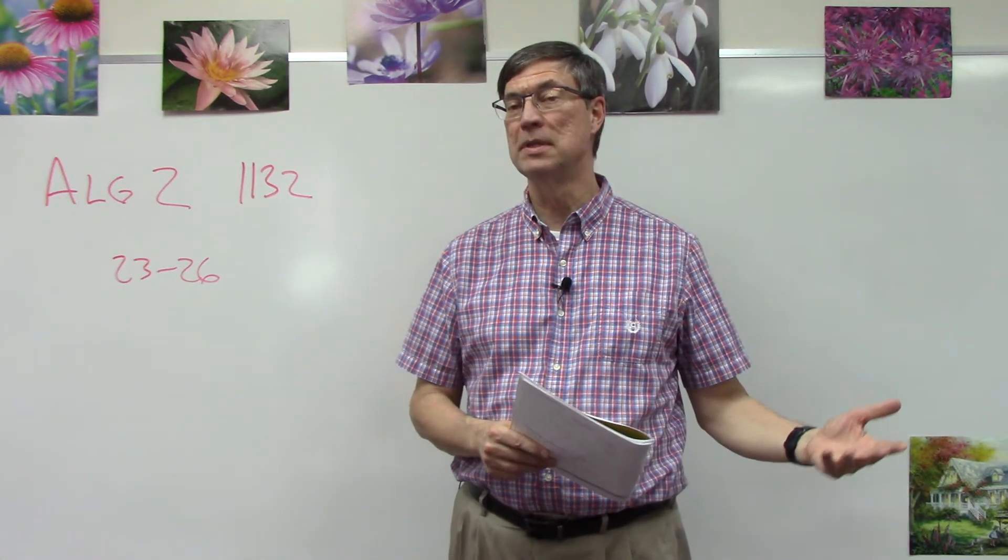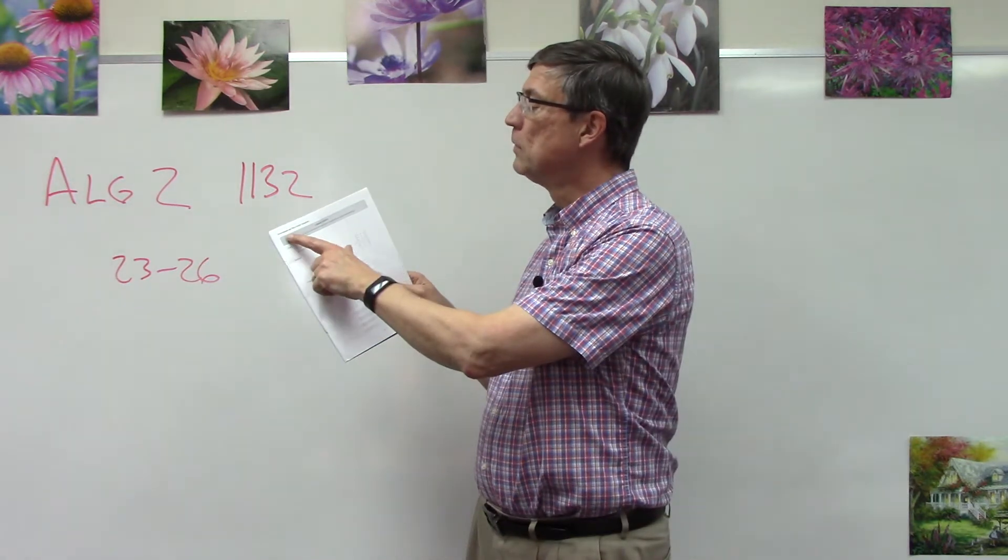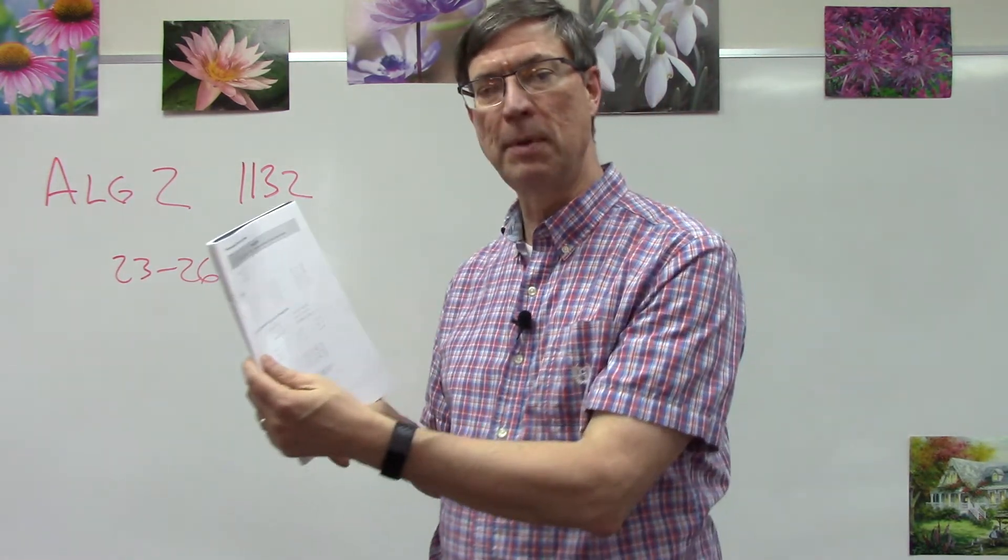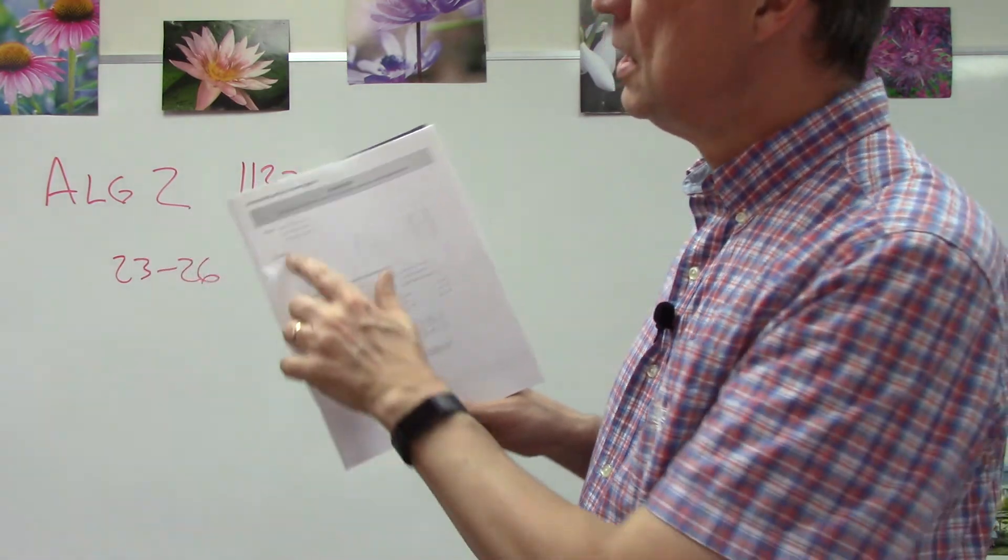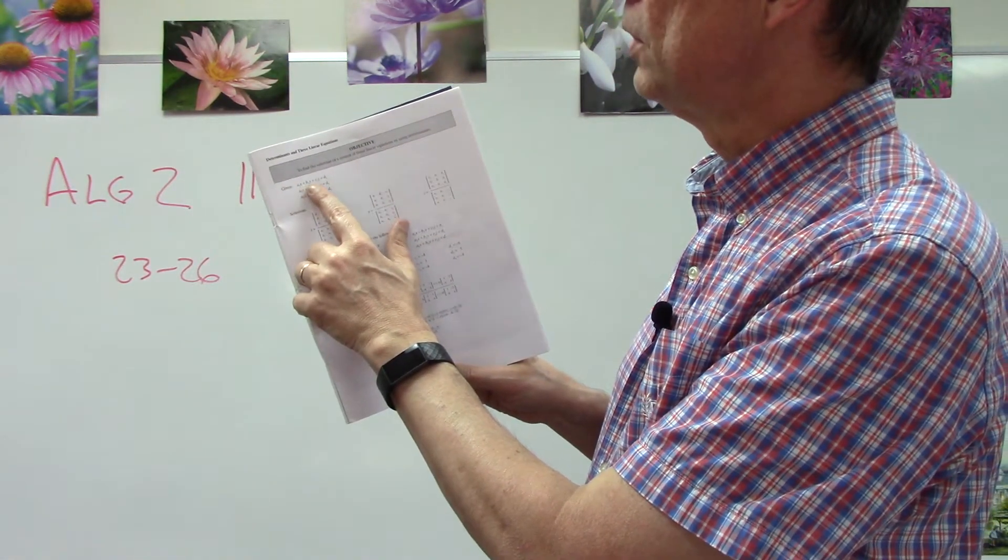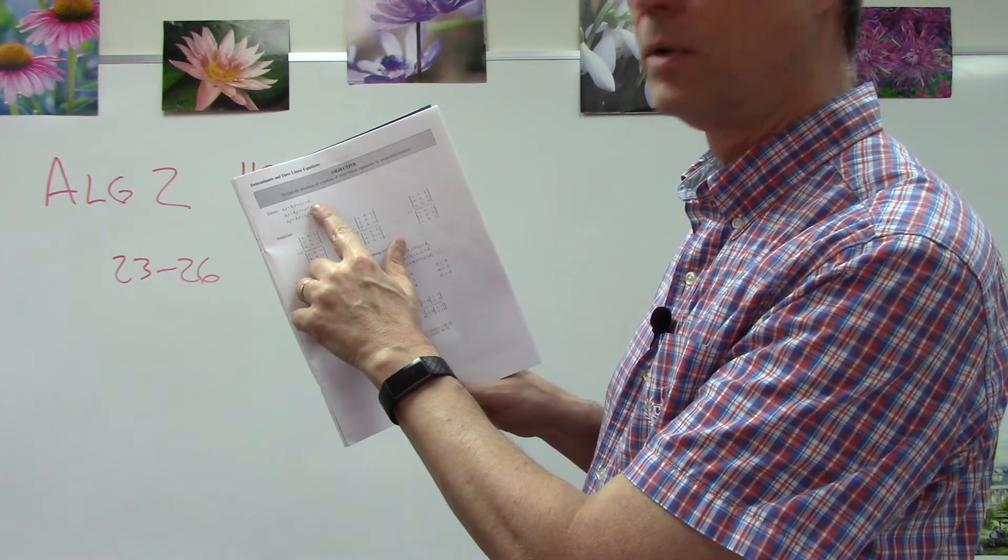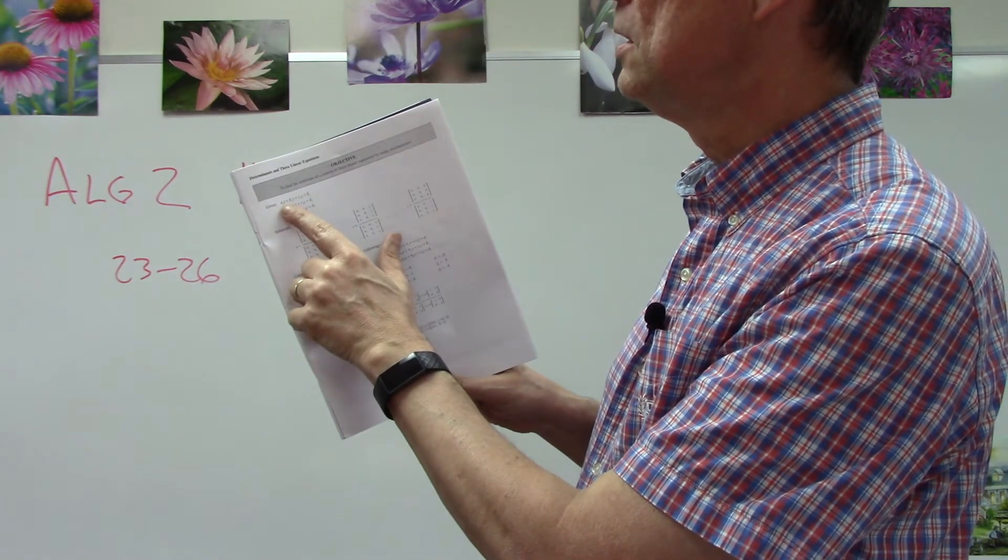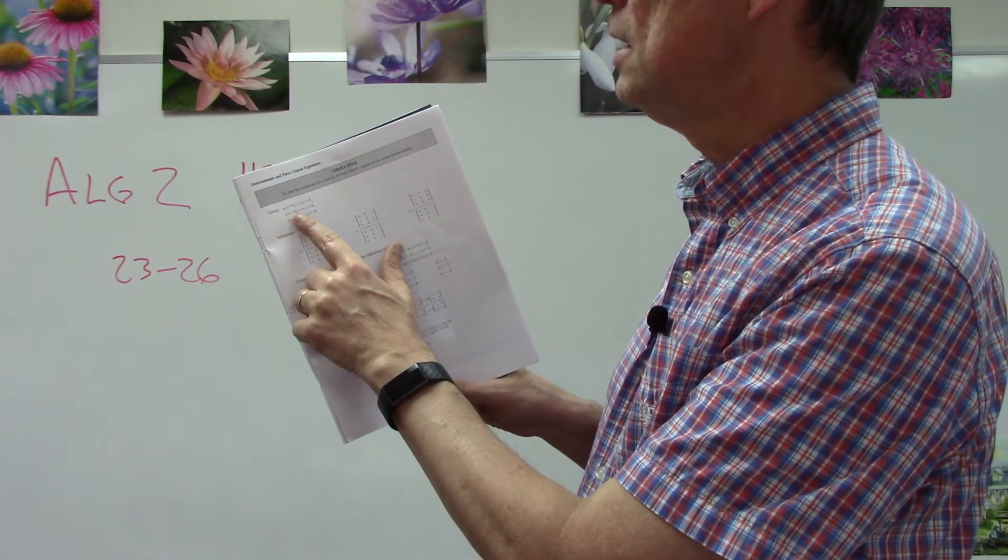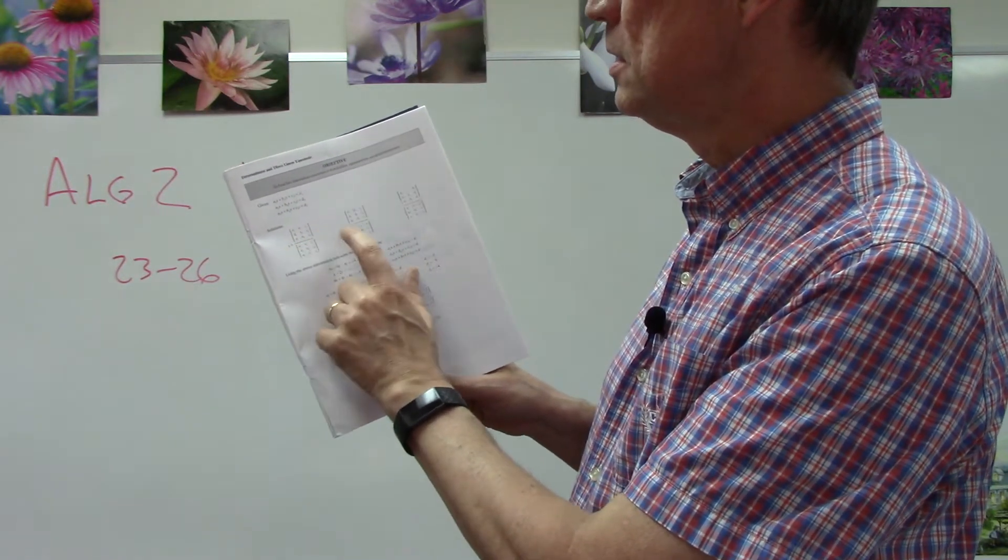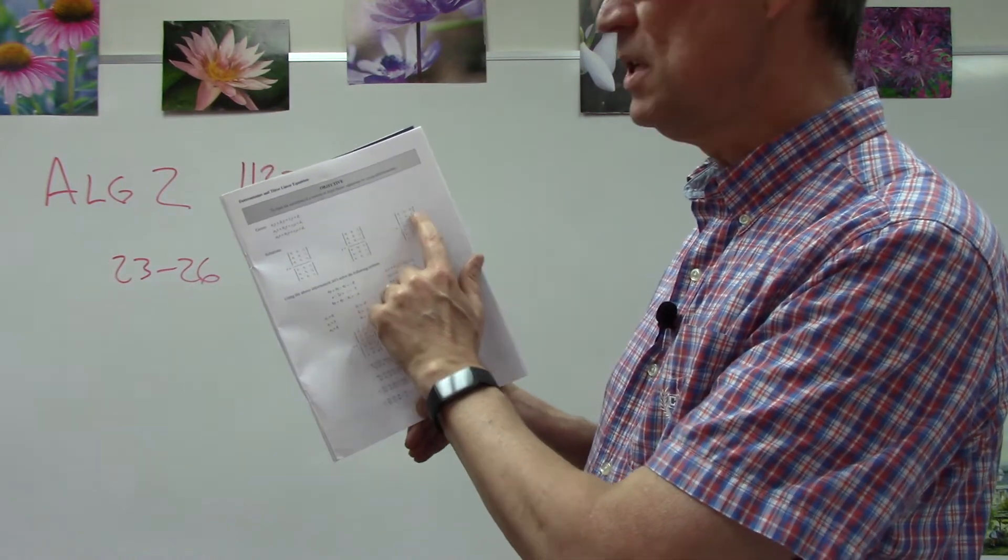Now let's talk about the last concept, and this is how we apply three by three determinants from matrices to solving when we have three equations. The first thing I want you to notice up here at the very top: we have a1x plus b1y plus c1z equals d1. The coefficients on x, y, and z are the a1, b1, c1. Second equation: a2, b2, c2, d2, etc.